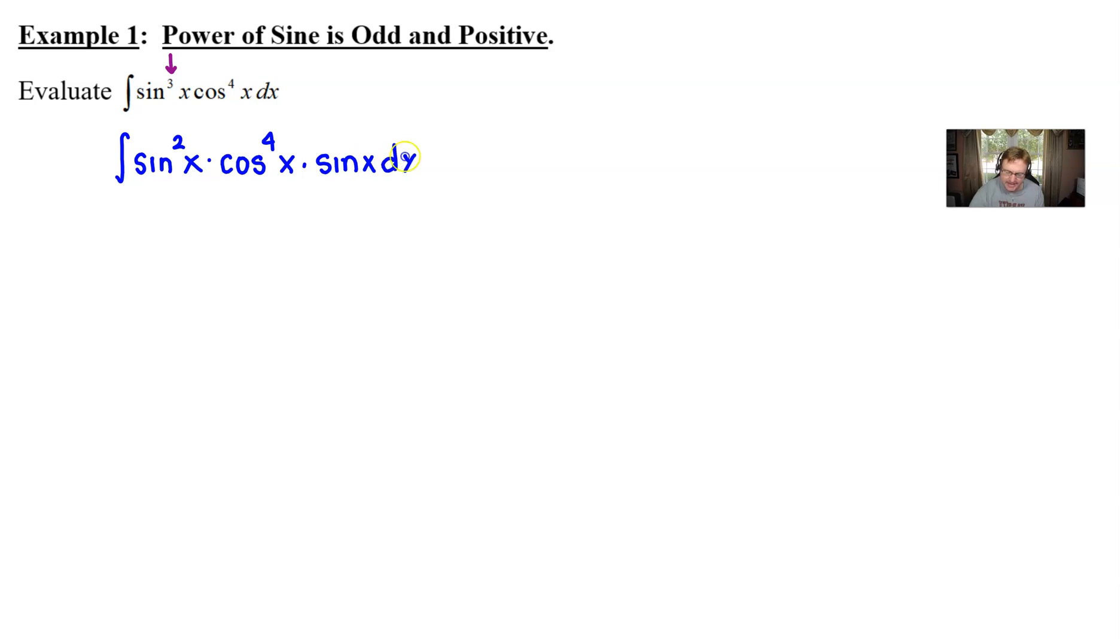Now why on earth would I do something like that you might think? Well the whole idea is to make this your candidate for your du you want to let u be something that has a derivative that will equal that du and what better u to let equal u to what better u to use than the cosine because we know that the derivative of the cosine is going to land yourself pretty darn close to a derivative of sine of x I think we might be off by a negative but we can easily fix that.